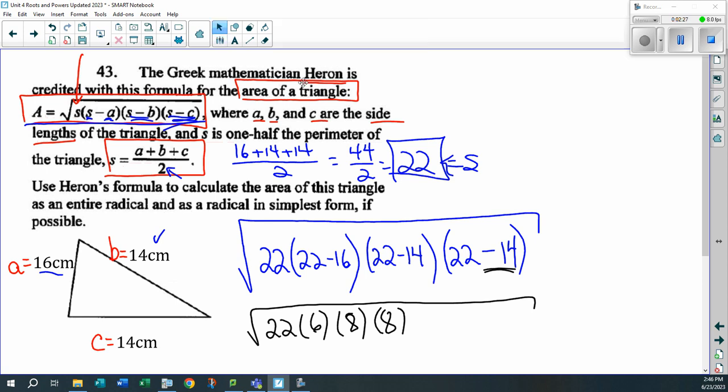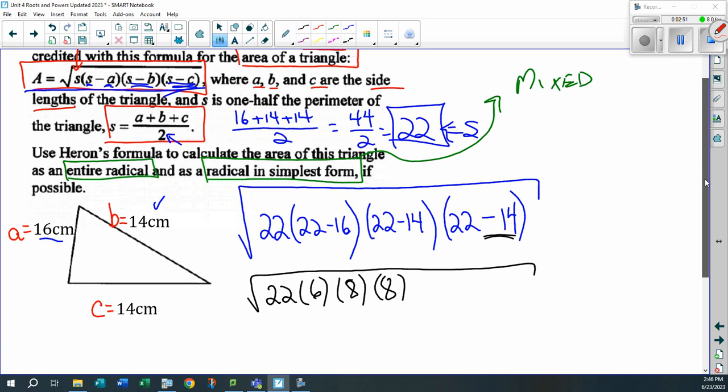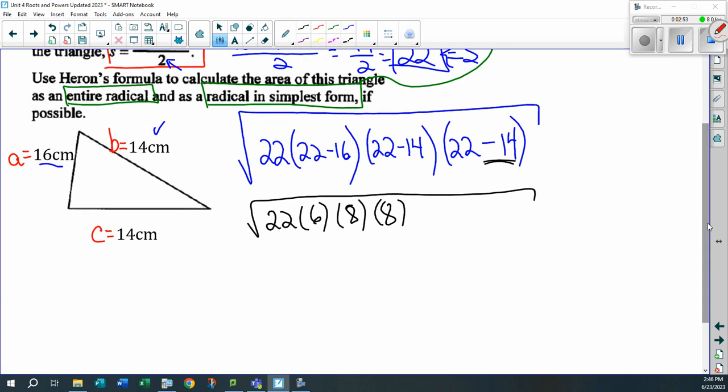Now, read the rest of the question. The question says, use Heron's formula to calculate the area of the triangle as an entire radical and a radical in simplest form. Whoa, what does radical in simplest form mean? That means it's got to be mixed. Oh, it's the mixed radical, so the ones with the numbers up front. Got it. Let's find the entire radical first.